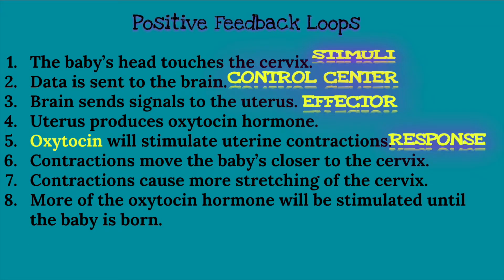Positive feedback loops are way less common than negative feedback loops. Positive feedback loops occur when something needs to happen quickly. An example of that can be found in childbirth, so we're going to use that as an example to break down how a positive feedback loop works.